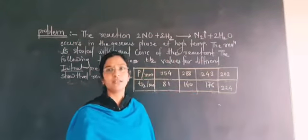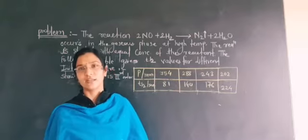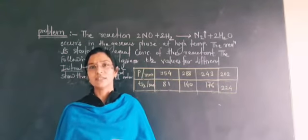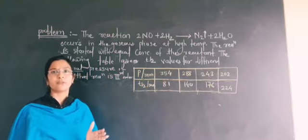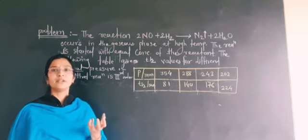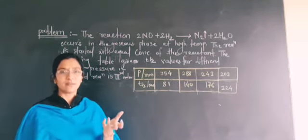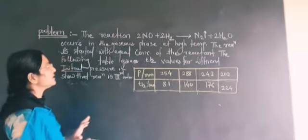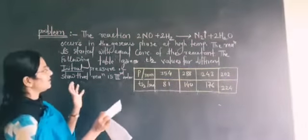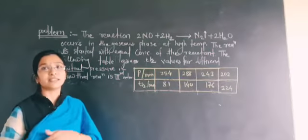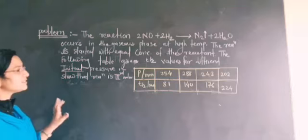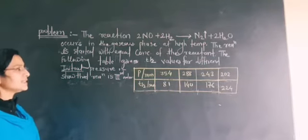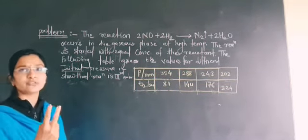Then one thing is very important. First you read the numerical and understand what is the given term and how we can solve the numerical by a proper way by using minimum time. The numerical is very simple. There are two ways to solve this numerical.